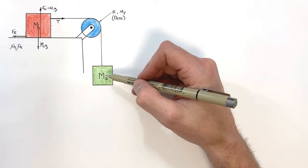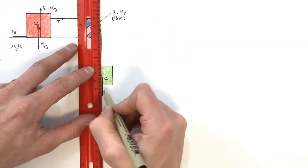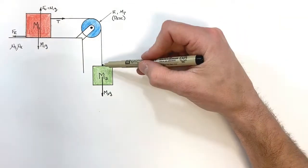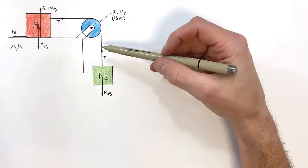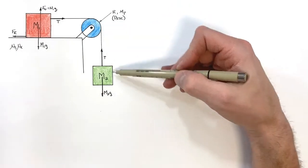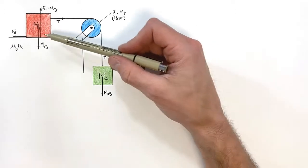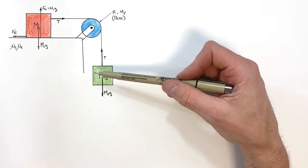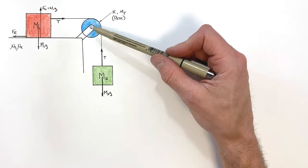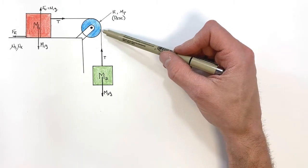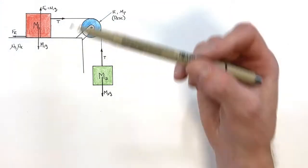Moving on to the hanging block: gravity pulls it down and the string tension pulls it up. Now, if this pulley had no mass, that would be the end of the story with forces and we could solve the problem. But we also have the pulley itself — and even though its axle is frictionless, there are forces acting on it. The string is pulling down on one side and to the left on the other.